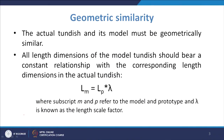This scale factor has to be maintained in all the geometric dimensions — the width should also have a ratio of 1:3, and similarly for the height. All length dimensions of the model tundish should have a constant relationship with the corresponding length dimension in the actual tundish. We represent it as L_m = L_p × λ, where m refers to the model, p refers to the prototype, and λ = L_m / L_p is the length scale factor.